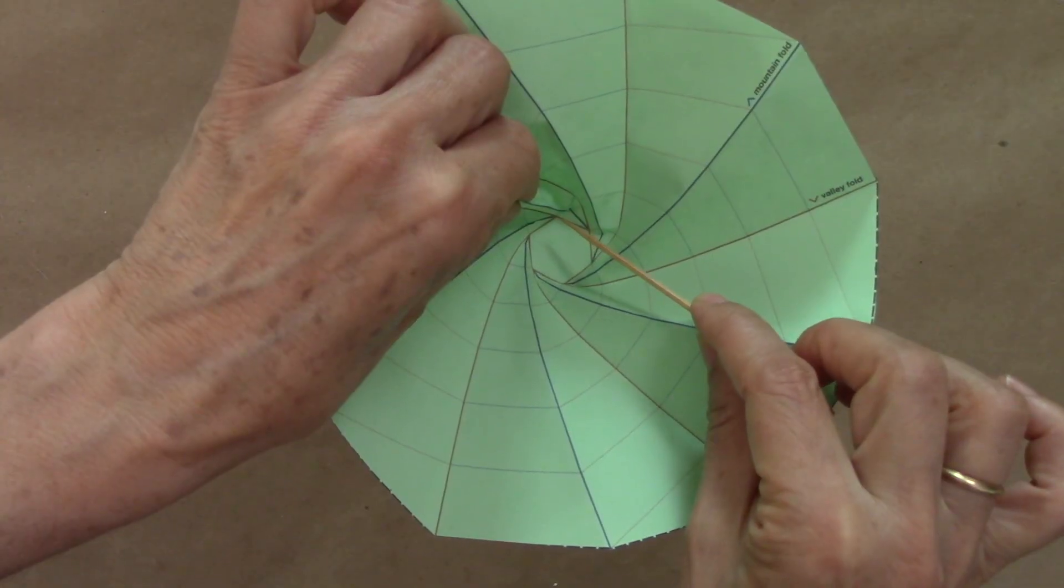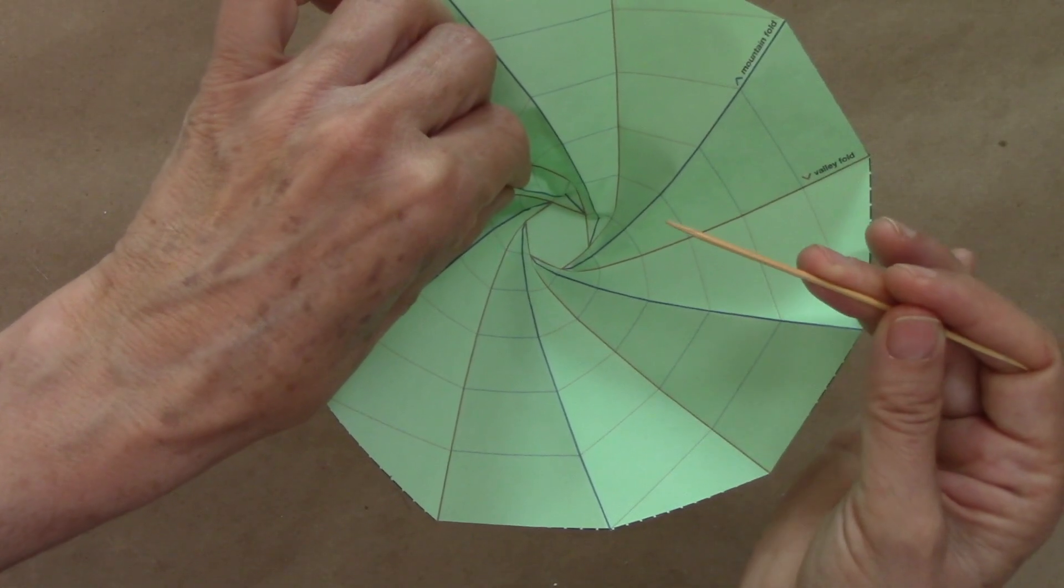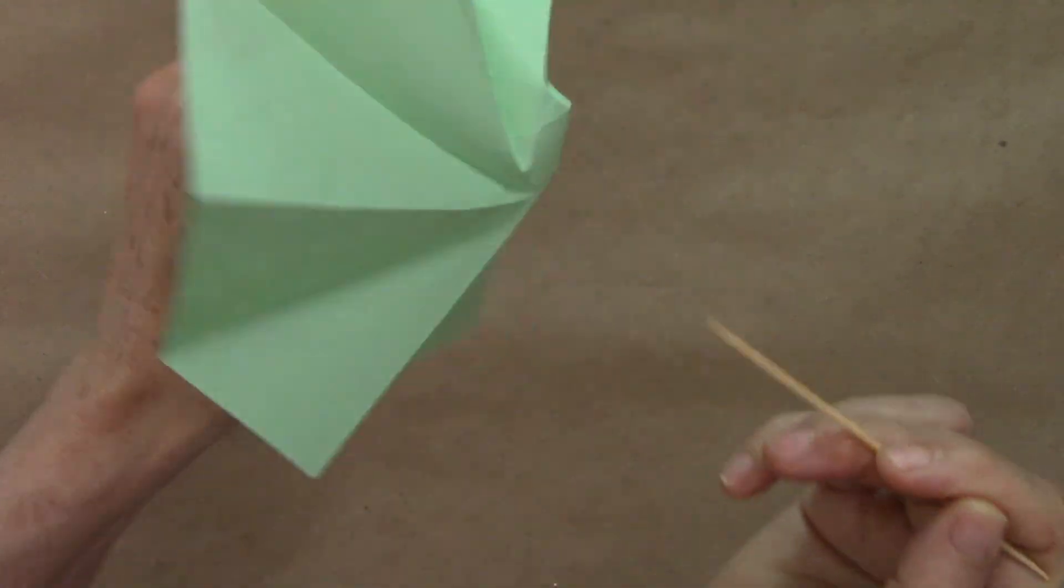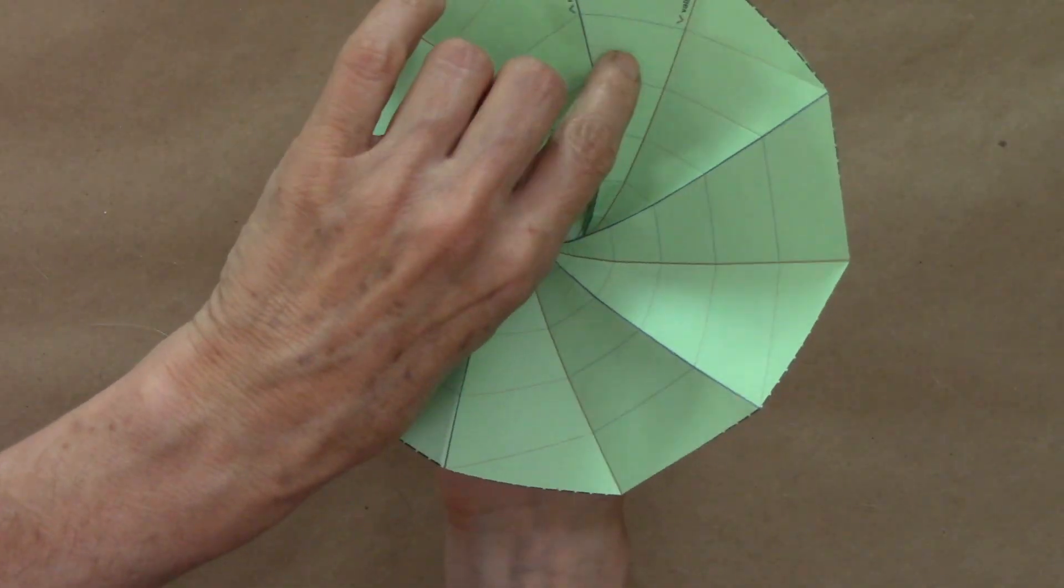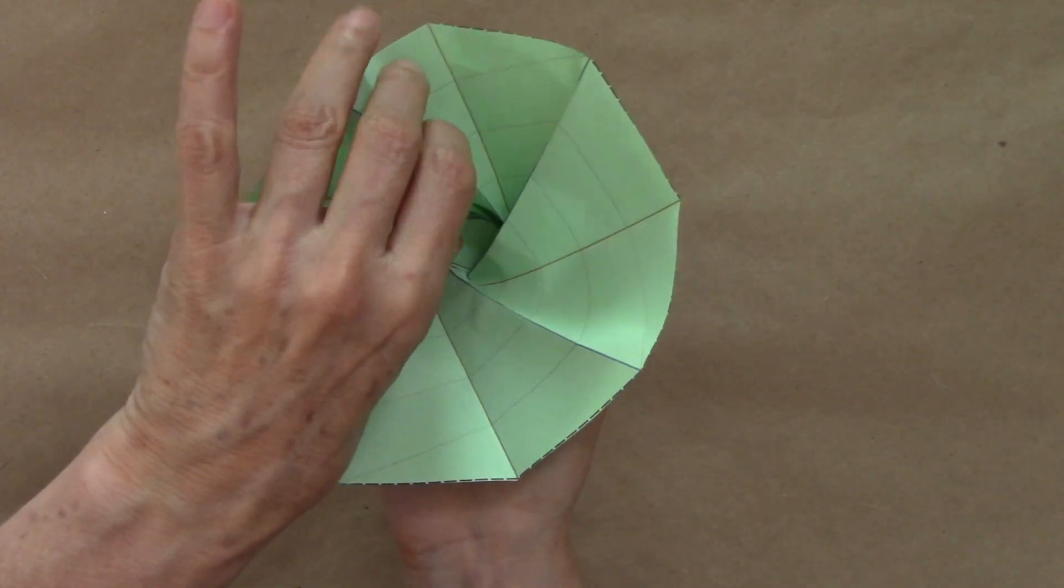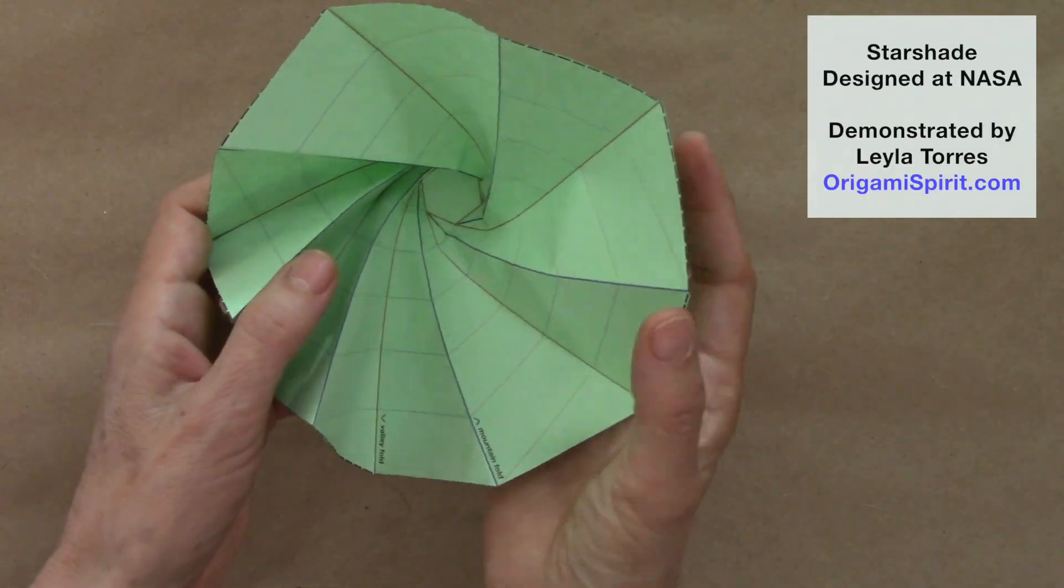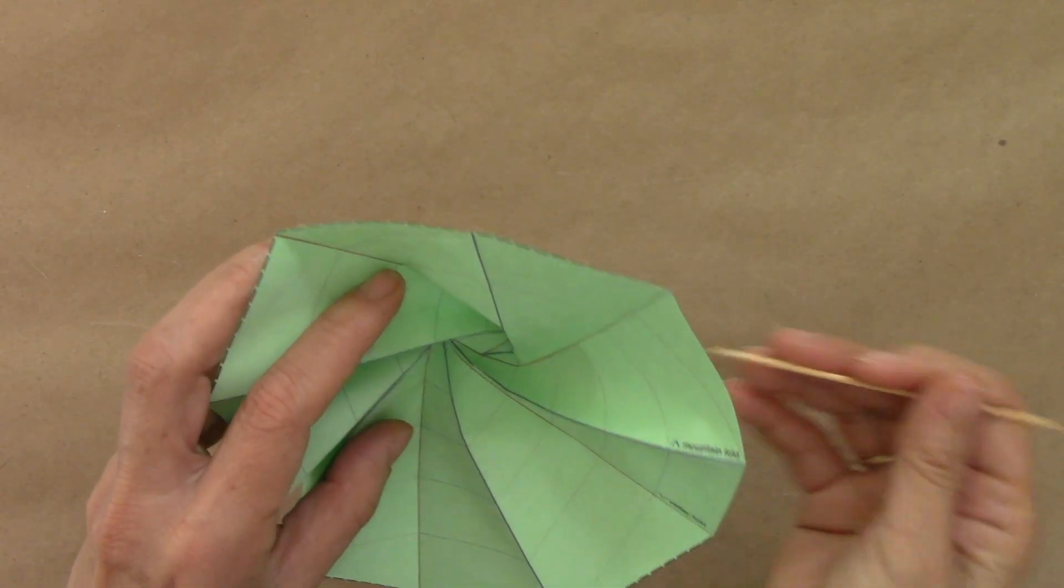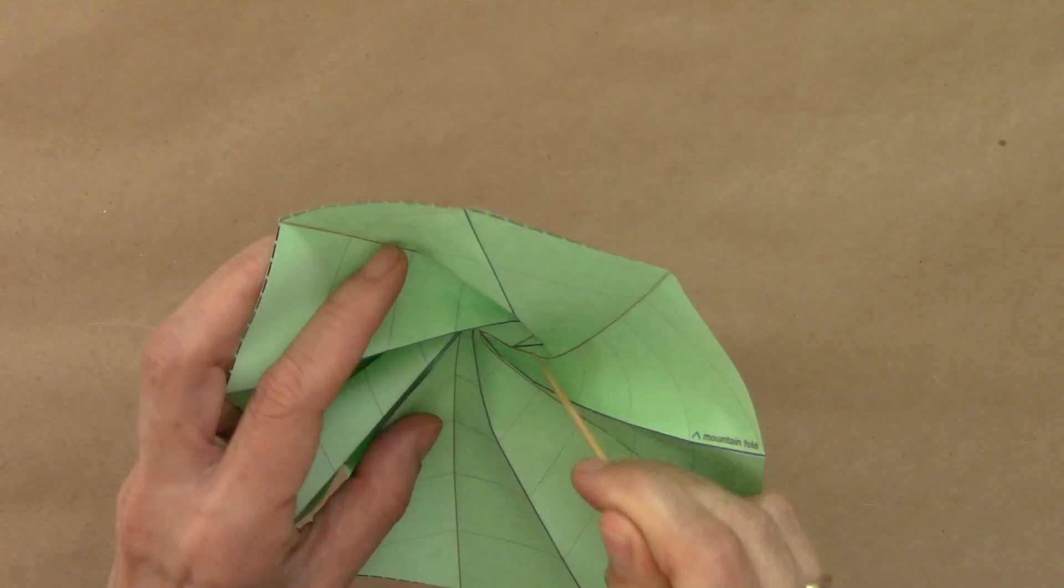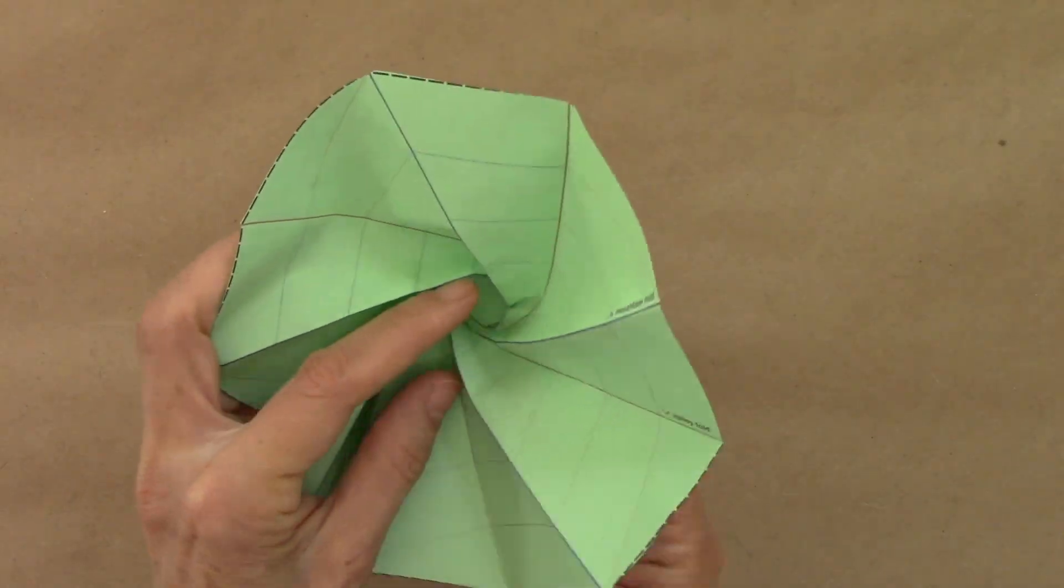In a case like this, the mountain fold wants to flatten so we can press from underneath with the toothpick. The main reason we might get stuck is because these mountain folds tend to flatten here. So we can press from underneath gently with the toothpick.